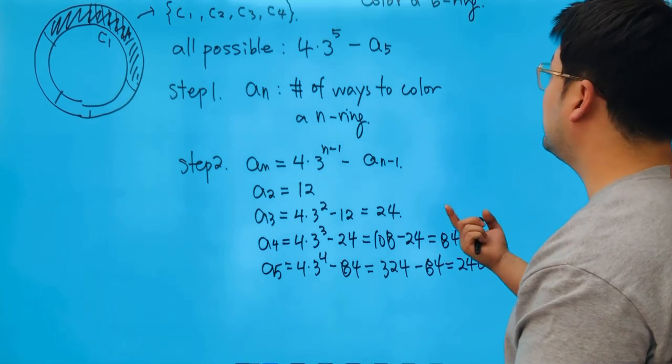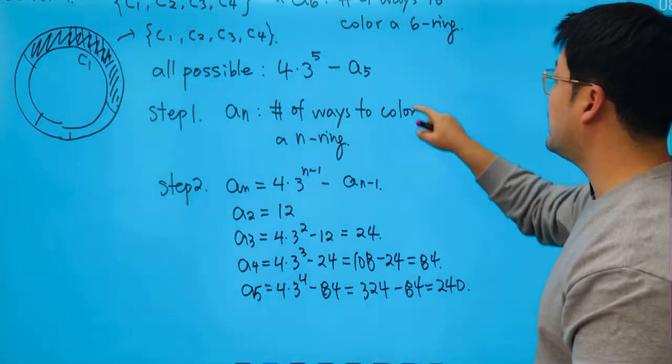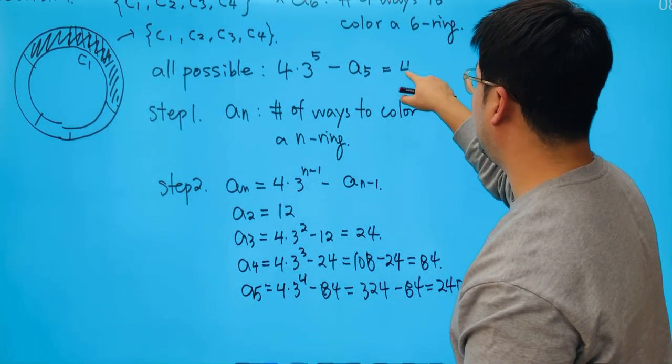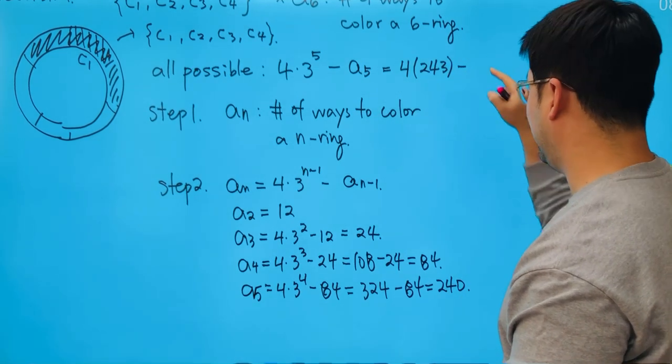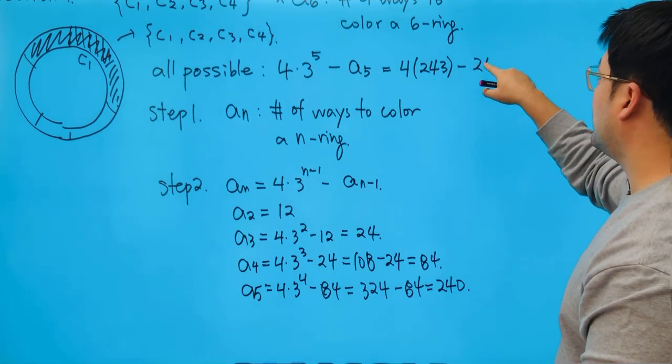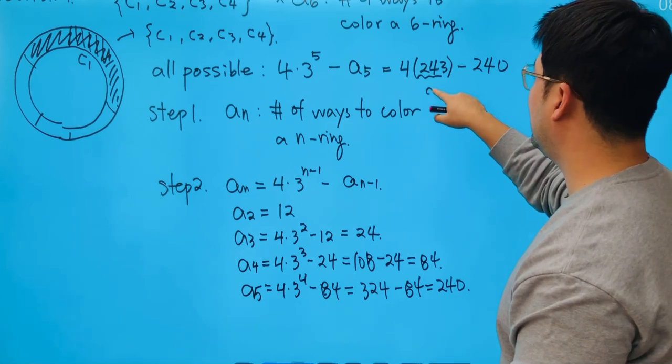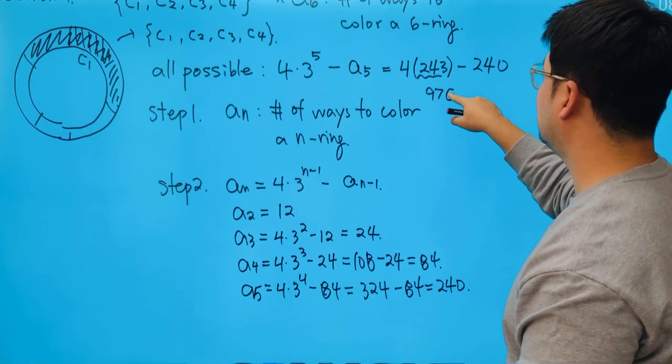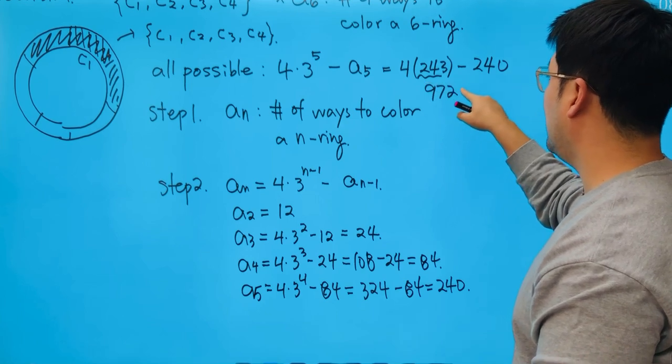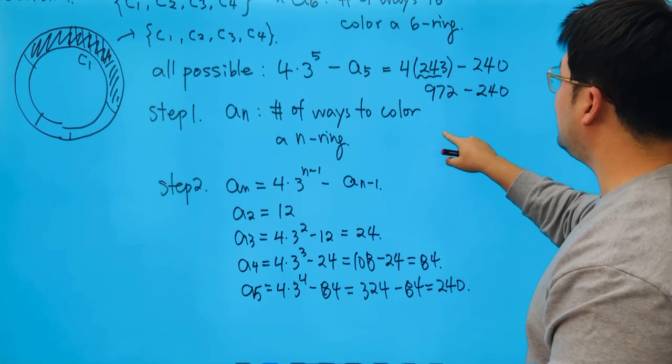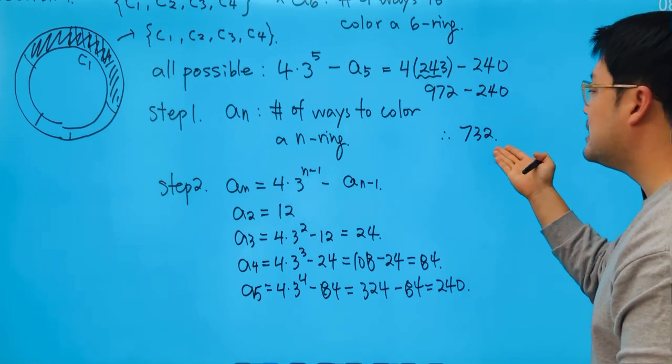Okay, so the next one is that we just have to figure out A_6. But I know that A_5 is supposed to be 240, so that turns out to be 4 times 243, and we're subtracting this with 240. So this will just be 972, and we're subtracting with 240. And eventually we get 732, and that becomes the answer.